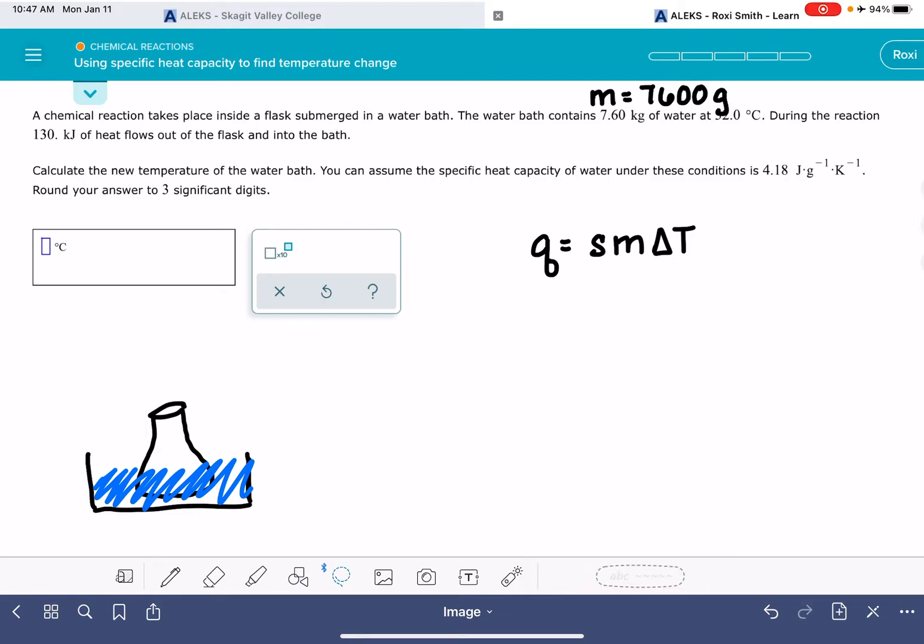Also, put that right over the top of some important information. This is next telling us that our temperature initially of the water bath is 32 degrees Celsius. That's going to be important. We're being asked to calculate the final temperature. So we don't know what that is. And we also don't know what delta T is.